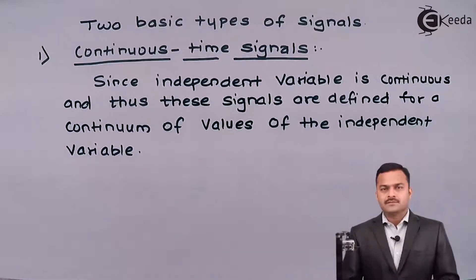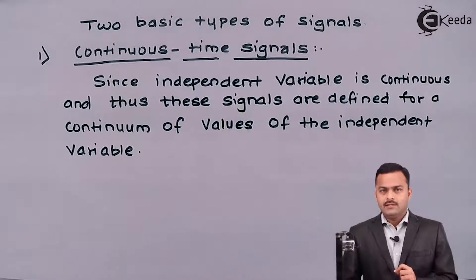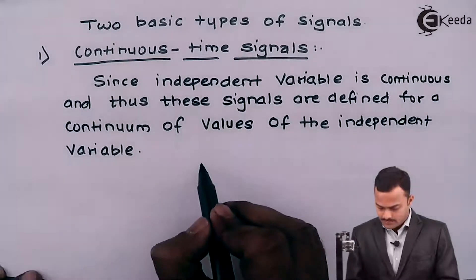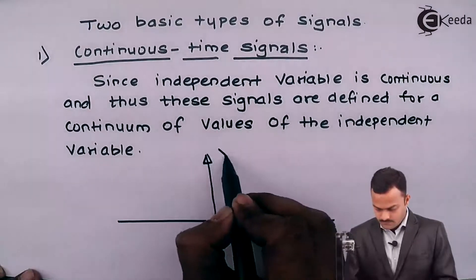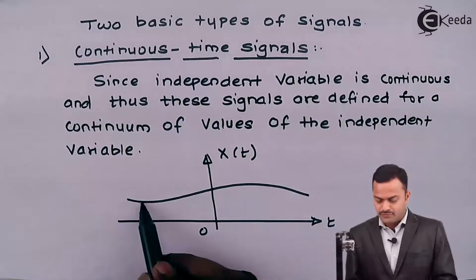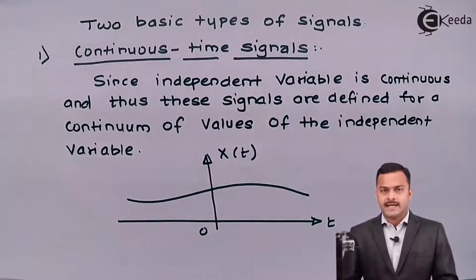What is the meaning of this? It means for each and every value of the independent variable, the signal does exist — whether it is an integer number or a fraction number. So if you want to plot the continuous time signal it will look like this — for every value of t. This is called a continuous time signal.